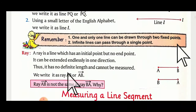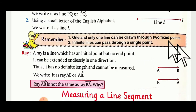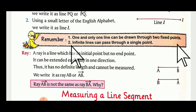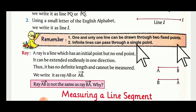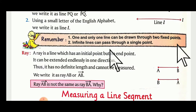Remember these important points. First: one and only one line can be drawn through two fixed points — if two dots are given and you join them, only one line can be drawn. Second: infinite lines can pass through a single dot — if a single dot is there, you can draw as many lines as you want.